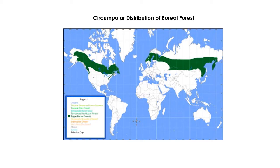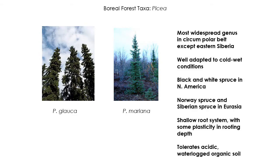Here's a map of the boreal forests. We have boreal forests in both North America and Eurasia, and it's circumpolar in its distribution, basically around the pole south of the Arctic tundra. There are far fewer species in boreal forests than in temperate forests, and fewer species in temperate forests than in tropical forests.